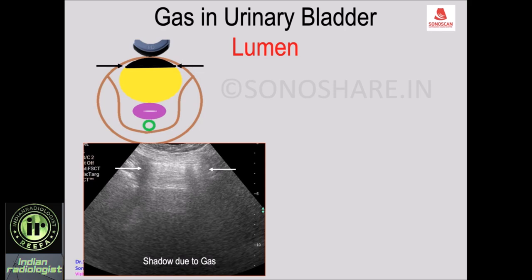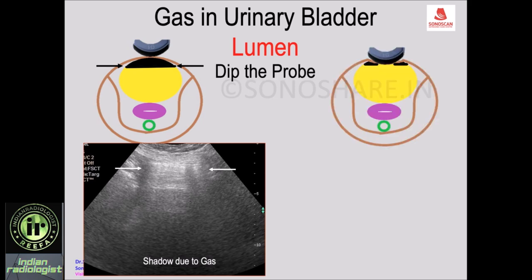This is the appearance. To confirm that there is gas within the lumen of the urinary bladder and not in the bowels or in the wall, a useful, simple technique is just to dip the probe down. When you dip the probe, the gas in the anterior part of the urinary bladder will be separated into two.